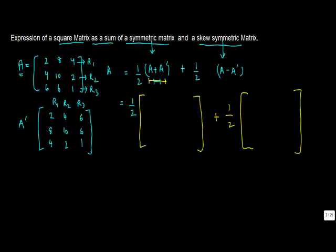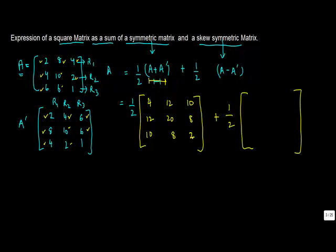Now let's compute A plus A-transpose. We pick up corresponding entries: 2 plus 2 gives 4, 8 plus 4 gives 12, 4 plus 6 gives 10. Then 4 plus 8 gives 12, 10 plus 10 gives 20, 2 plus 6 gives 8. Then 4 plus 6 gives 10, 6 plus 2 gives 8, and 1 plus 1 gives 2. So we are done with the first part.